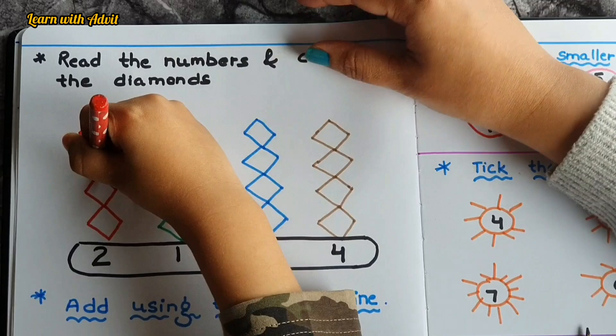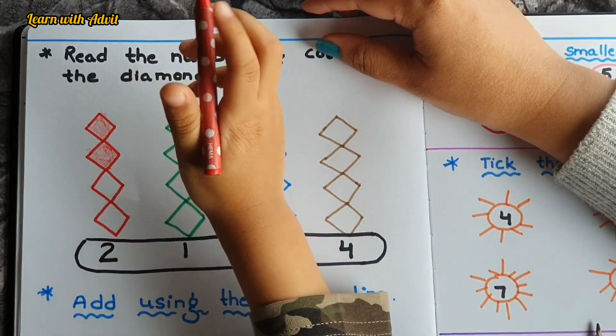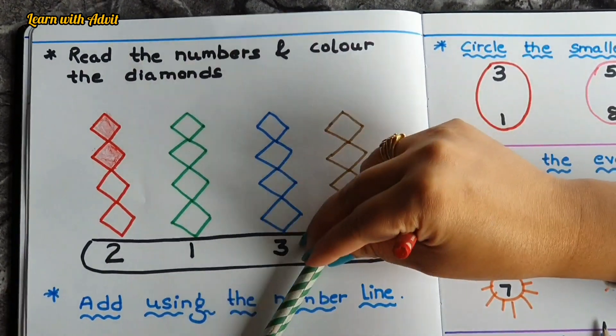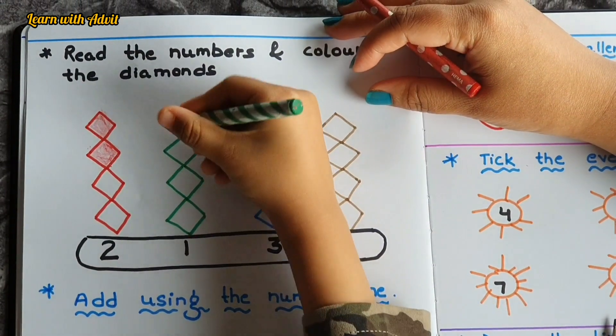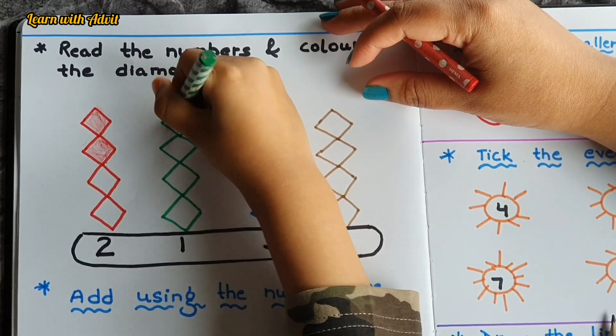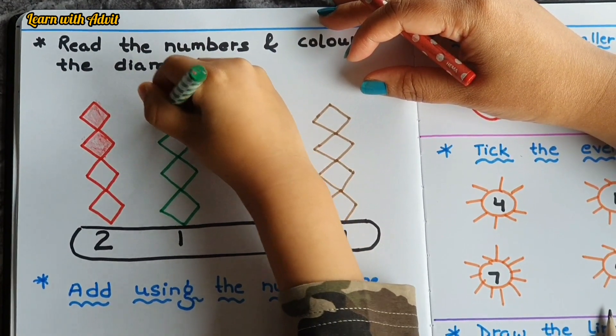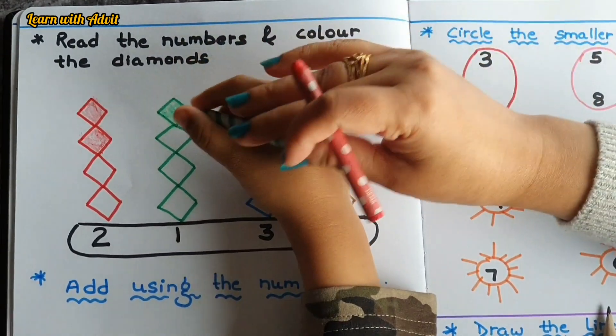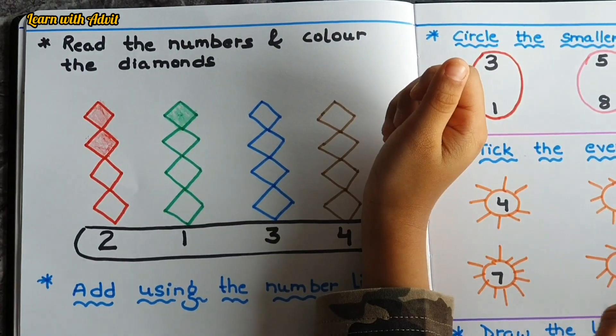Very good, next. Which number? Then one. So you have to color only one. One. Very good, do it fast.